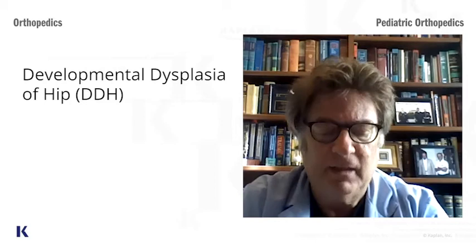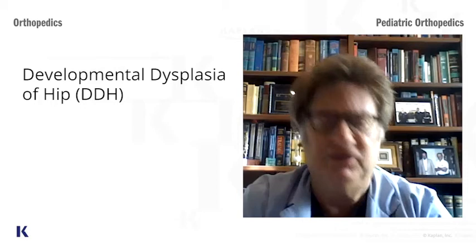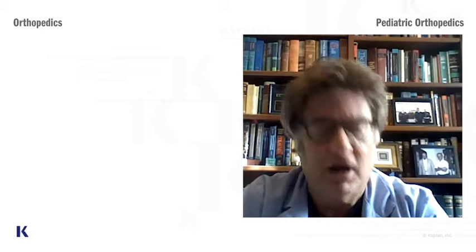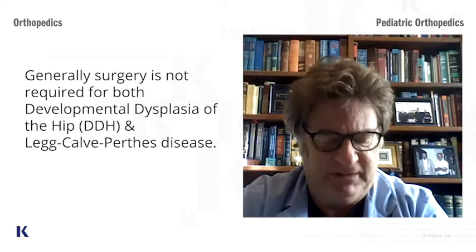Developmental dysplasia of the hip — also called congenital dislocation — is the hip condition seen in babies. If a child is around six years old and has a hip issue, that is Legg-Perthes disease. Both developmental dysplasia of the hip and Legg-Perthes disease are generally treated non-operatively.